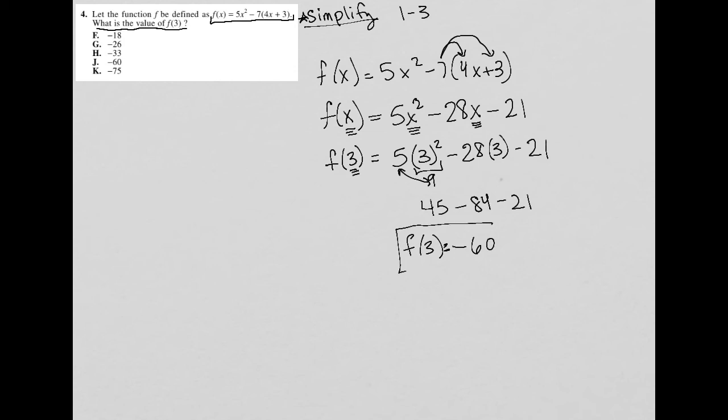Since that's what the question was asking me to find, I know that I'm finished. And I find my answer up here, which is choice J. So notice that I didn't look at the answers at all. And this is typical of simplified questions. I didn't look at the answers until the very end.